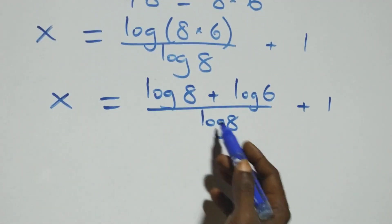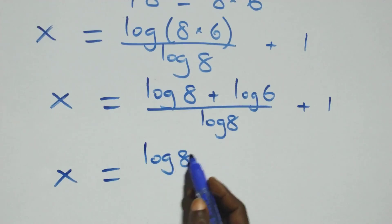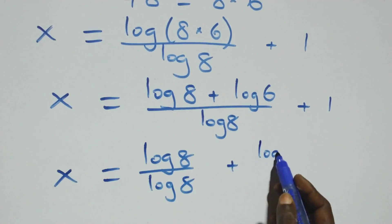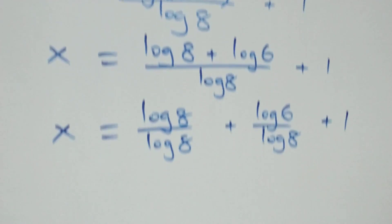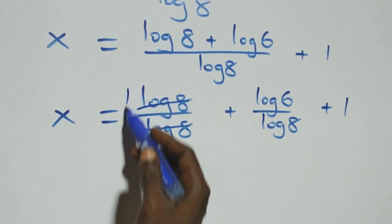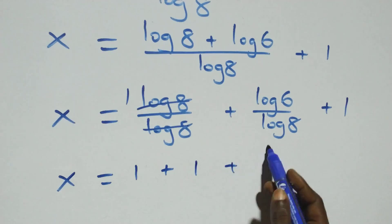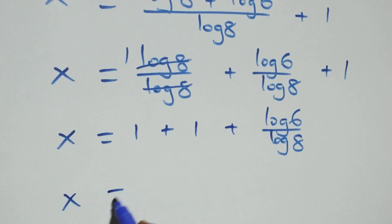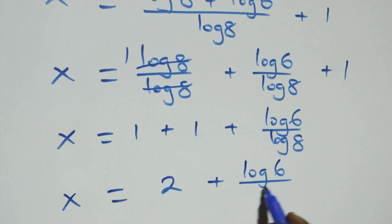Then we separate this into two fractions: x equals log 8 over log 8, plus log 6 over log 8, plus 1. This implies log 8 over log 8 cancels to give 1, so x equals 1 plus log 6 over log 8.